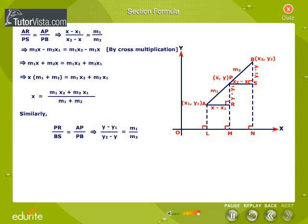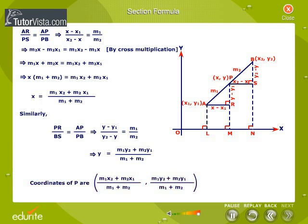Similarly, PR by BS is equal to AP by PB, which implies that Y minus Y1 by Y2 minus Y is equal to M1 by M2. Therefore, Y is equal to M1Y2 plus M2Y1 by M1 plus M2.